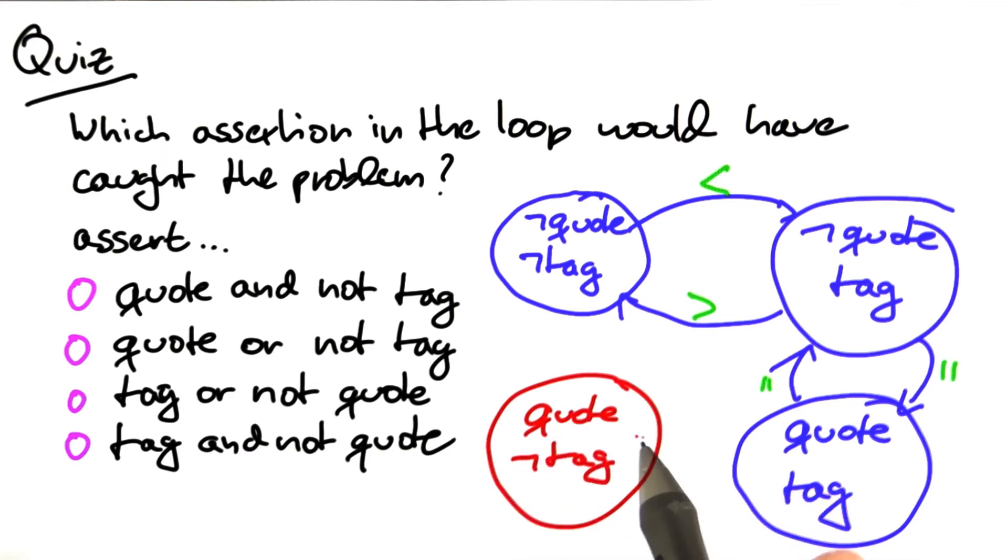So how can we express this with our assert statement? What we want to make sure is that this state can never be reached. So this is quote and not tag. The inversion of this is tag or not quote. You can see that either we're in non-quote mode or if we are in quote mode, then we are in tag mode.